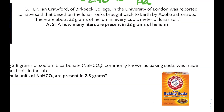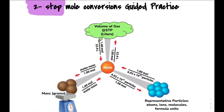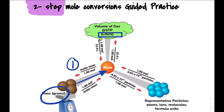For our next example, number three: Dr. Ian Crawford of Birkbeck College and the University of London reported that based on lunar rocks brought back by Apollo astronauts, there are about 22 grams of helium in every cubic meter of lunar soil at STP. How many liters are present in 22 grams of helium? In this problem we're given grams of a gas and asked for liters, so we'll convert from grams to moles as our first step, and then moles to liters as our second step.